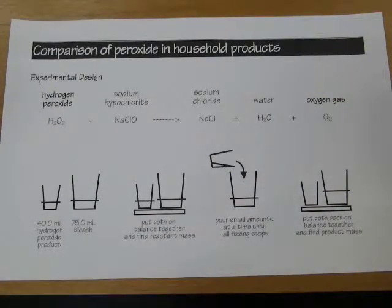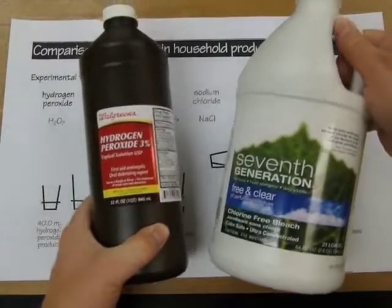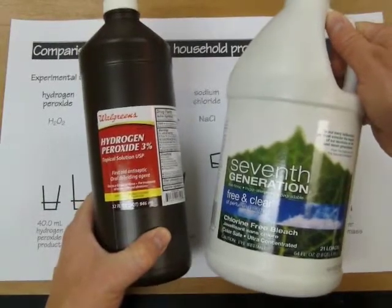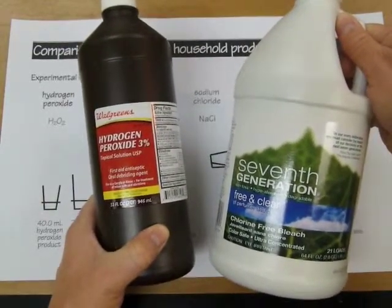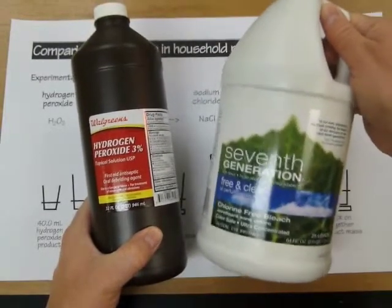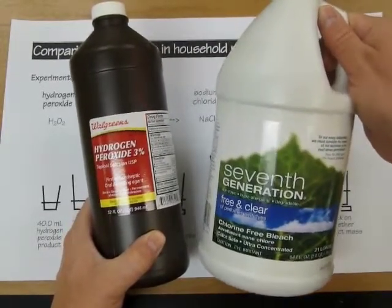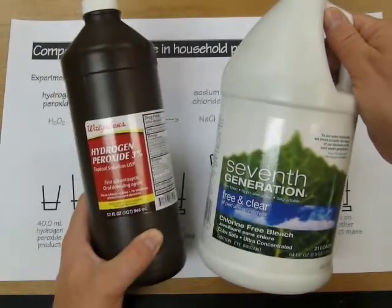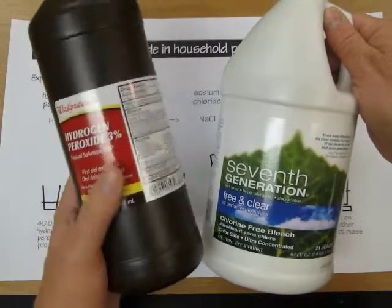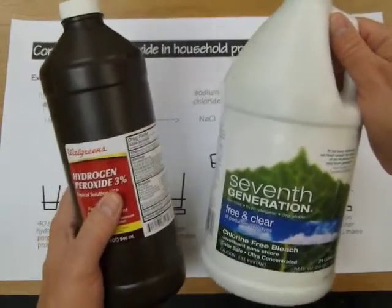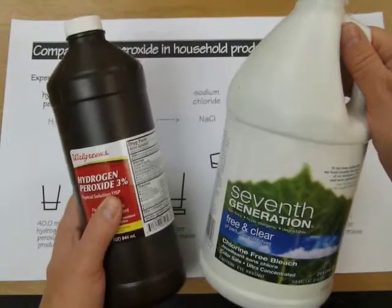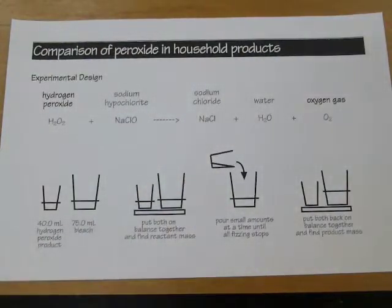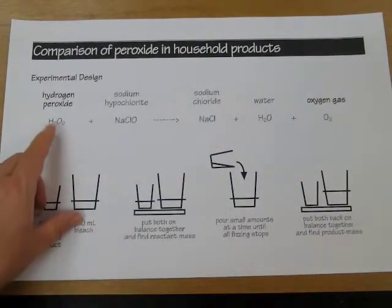Let's review the problem we're working on: we are comparing the amount of hydrogen peroxide, the active ingredient, in two household products. One is sold in the band-aid aisle and used as an antiseptic; the other is sold in the laundry aisle and used as an alternative to chlorine bleach. Both contain hydrogen peroxide. The antiseptic bottle says three percent, but the laundry product doesn't say, so we have to measure to find out and do a cost comparison.